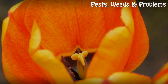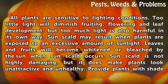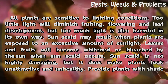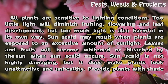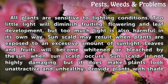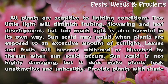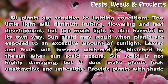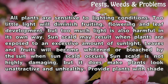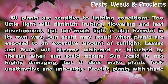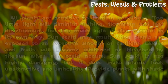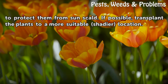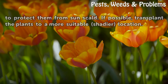Lighting. All plants are sensitive to lighting conditions. Too little light will diminish fruiting, flowering and leaf development, but too much light is also harmful in its own way. Sun scald may result when plants are exposed to an excessive amount of sunlight. Leaves and fruits will become whitened or bleached by the sun when sun scald occurs. Sun scald is not highly damaging, but it does make plants look unattractive and unhealthy. Provide plants with shade to protect them from sun scald. If possible, transplant the plants to a more suitable, shadier location.